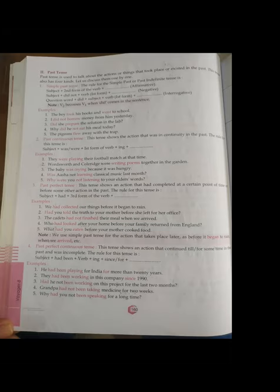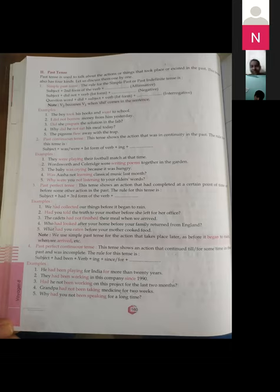Did she prepare - prepare again is first form of verb. Fourth sentence: why did he not eat his meal today? The question is beginning with wh word and we have placed did after why, and not is placed after subject. Eat is first form of verb. Fifth sentence: the pigeons flew away with the trap. This is affirmative sentence, that's why we have used flew.